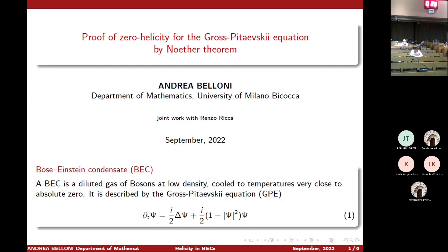I'm going to give you a brief reminder about the physical context and then present the method. The physical context is the Bose-Einstein condensate — a diluted gas of bosons at low density cooled to temperatures very close to absolute zero. It is described by the Gross-Pitaevskii equation, which we have already seen, that is a non-linear Schrödinger equation for the wave function psi, with time evolution on the left and the Laplacian plus the non-linear contribution on the right.